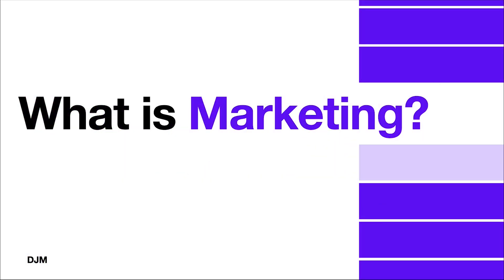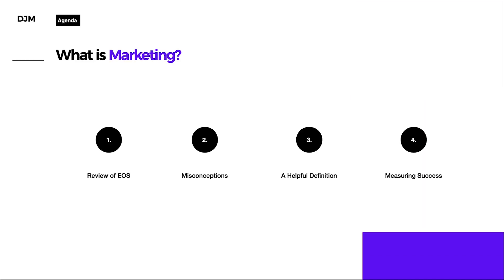Hello jeweler, welcome to the module on what is marketing. In this video we're going to cover: number one, a quick review of the Entrepreneur's Operating System; number two, some misconceptions about marketing; number three, a helpful definition of marketing; and number four, measuring success — because how can you know that you have this marketing system down without being able to measure things?